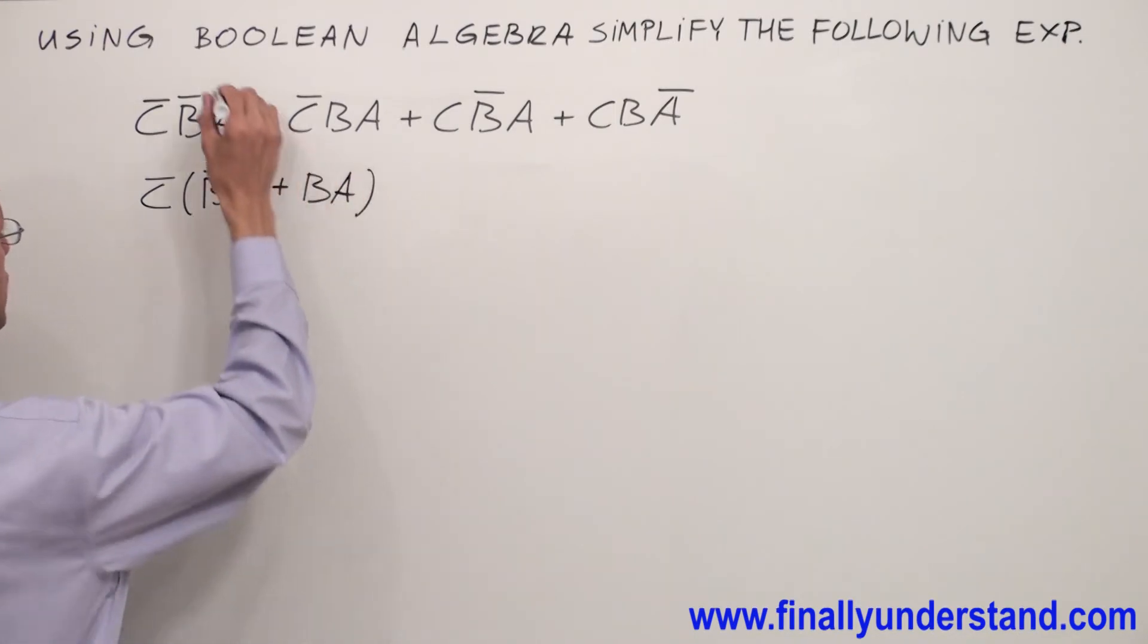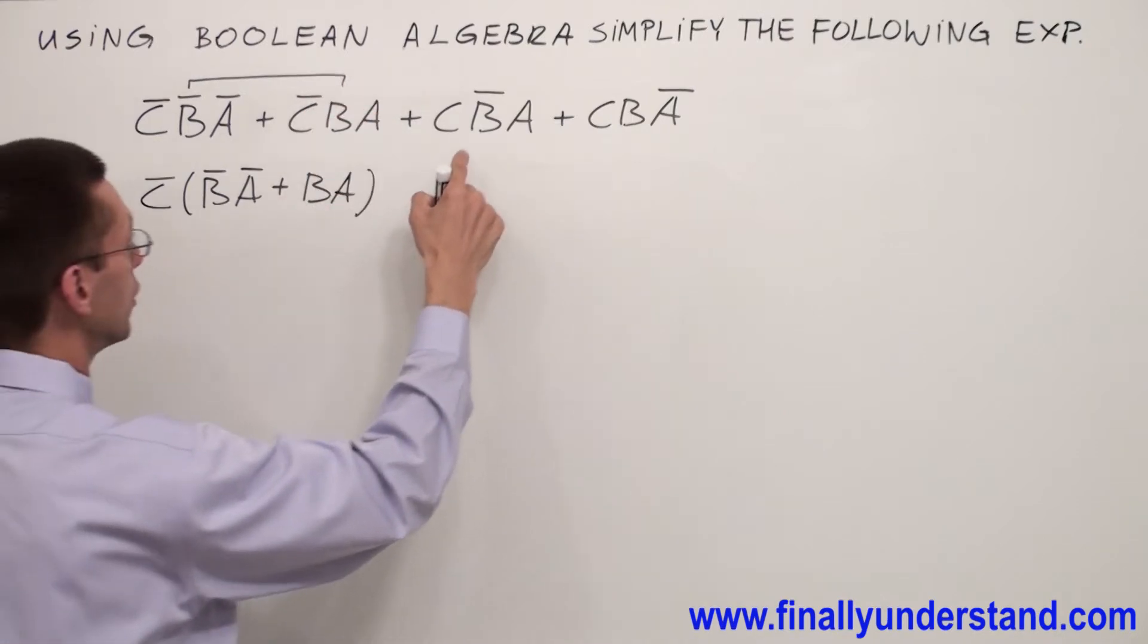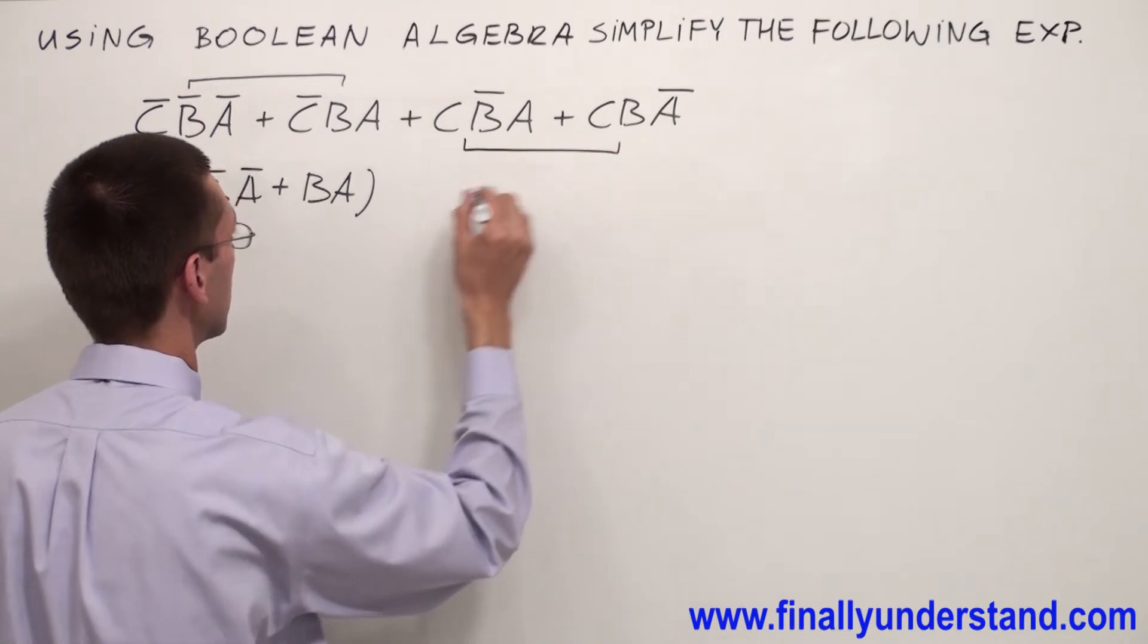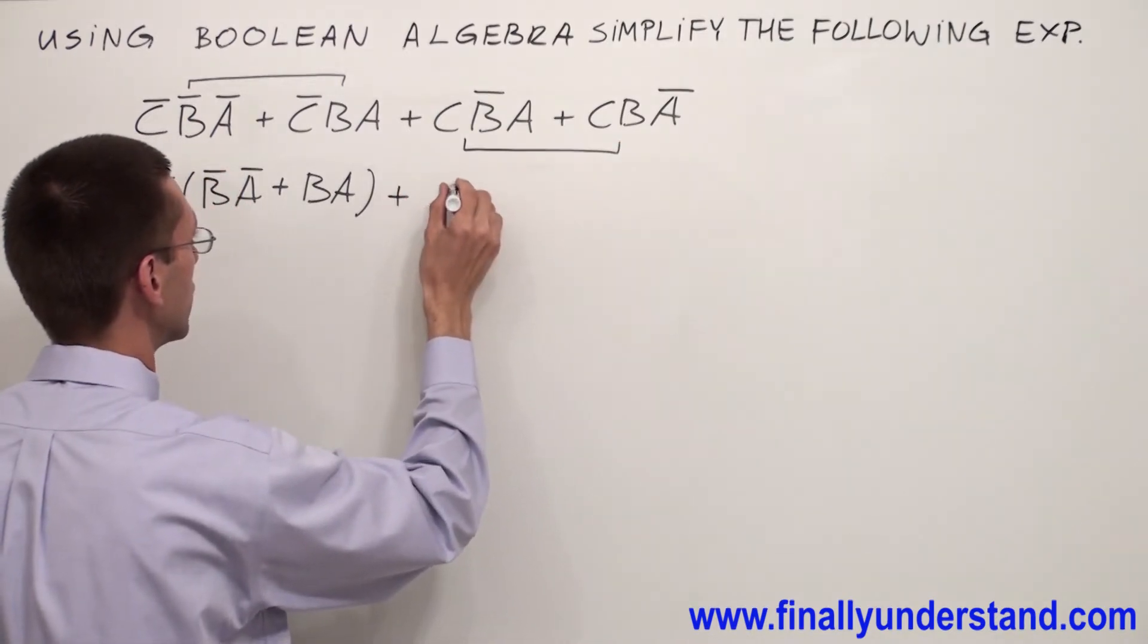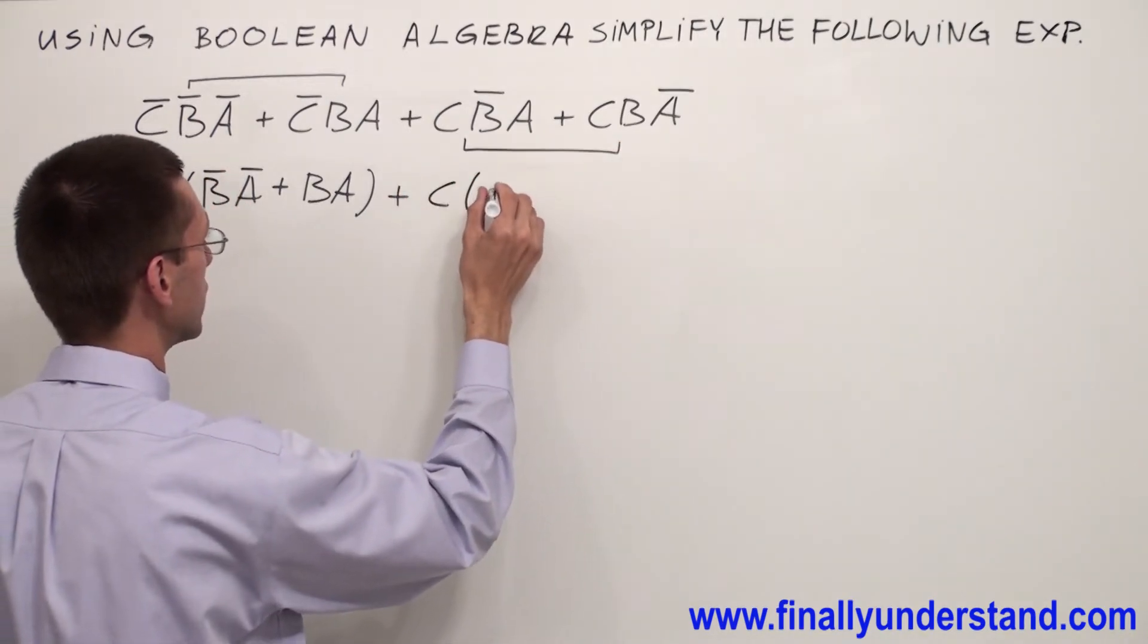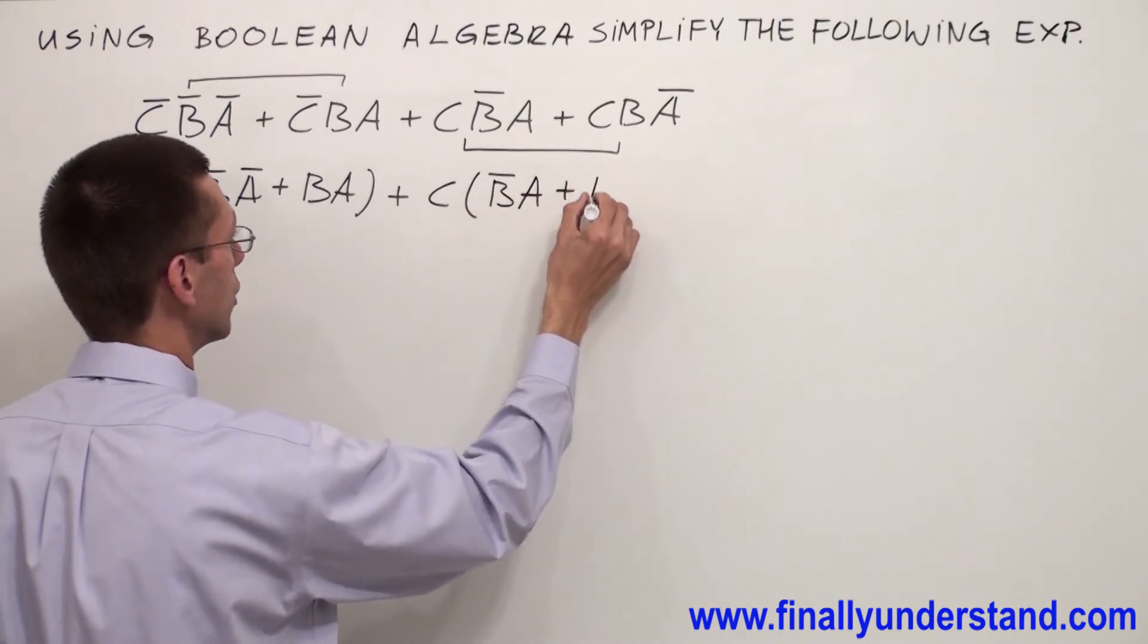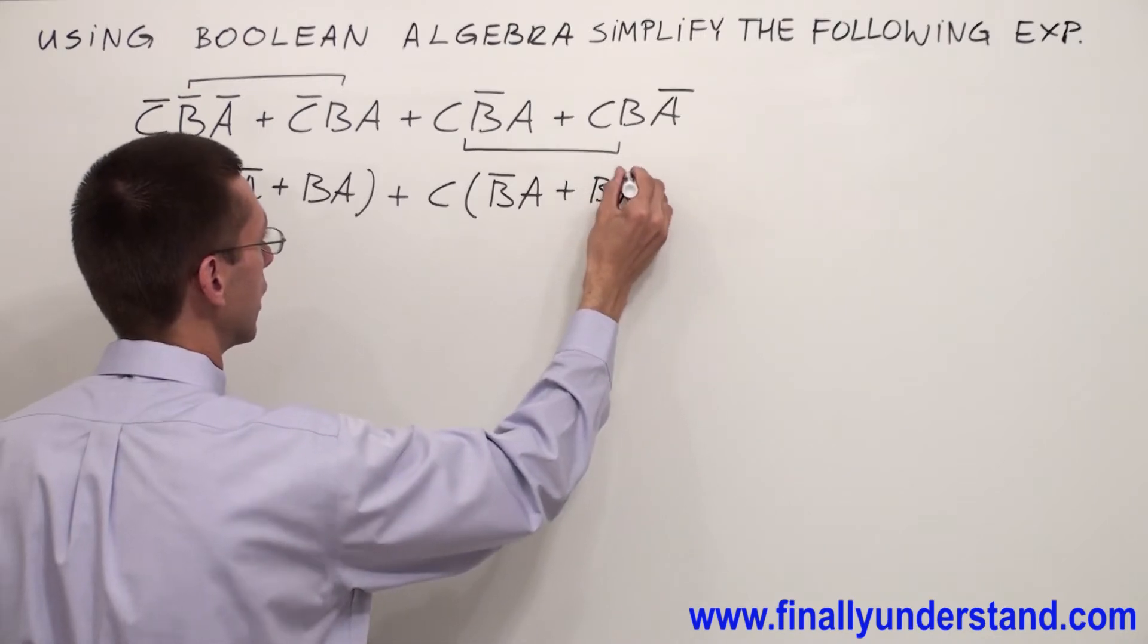I'm going to factorize C-bar from these two terms. From these two terms I can factorize C. That's why I'm going to write C in front of the parentheses, and in parentheses I'm going to write B-bar A or BA-bar.